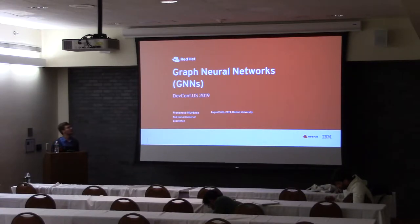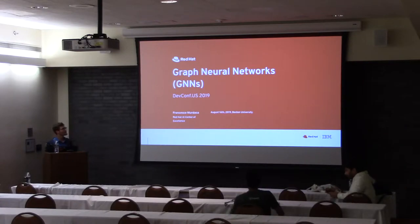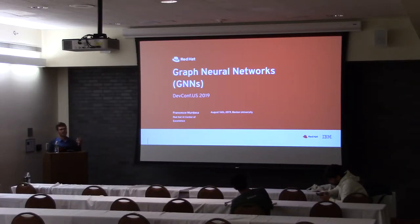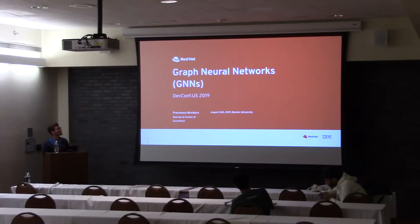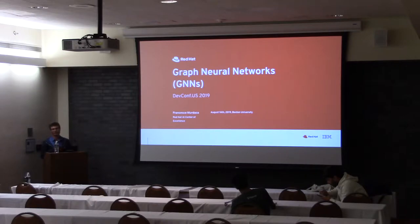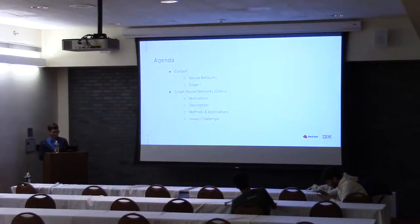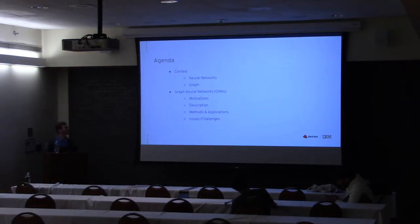Today I will talk about graph neural networks. This is a different type from the traditional ones because they focus on specific structured data, which are graphs. You will see why this is so important, especially because you have many types of graphs everywhere — social networks, knowledge graphs — which contain many useful information that we want to use in neural networks. This is the agenda for today: I will briefly introduce graph neural networks, the basic components, and then go a little bit more into the details.